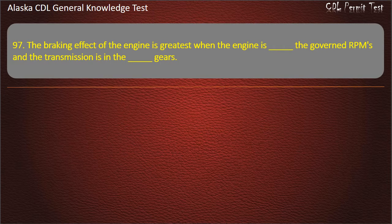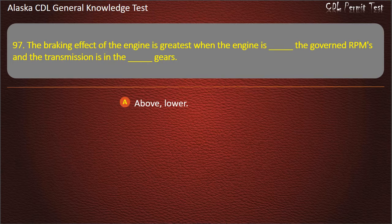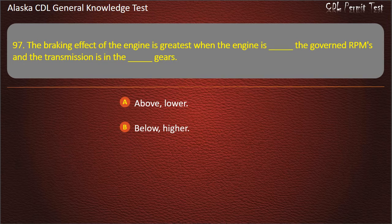Question 97. The braking effect of the engine is greatest when the engine is near governed RPMs and the transmission is in the lower gears. Options: above/lower, below/higher, or near/lower. Answer: Near, lower.